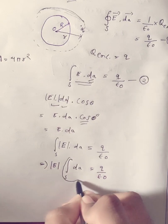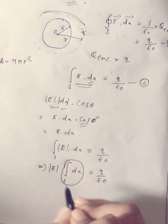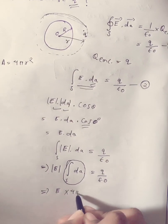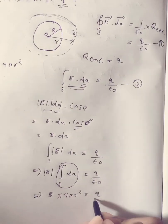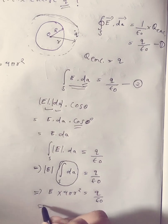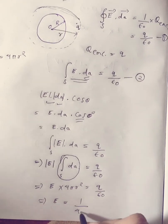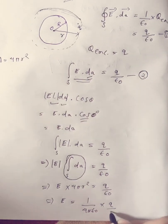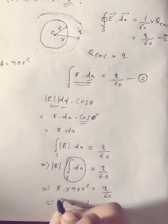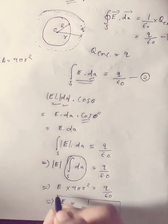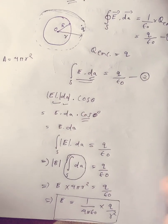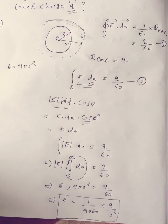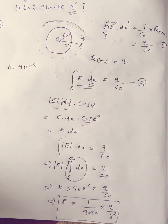I can write 4 pi r squared instead of the integral. So E times 4 pi r squared equals Q by epsilon-0. Therefore, the electric field magnitude is 1 by 4 pi epsilon-0 times Q by r squared. This is the magnitude of the electric field outside a uniformly charged solid sphere.